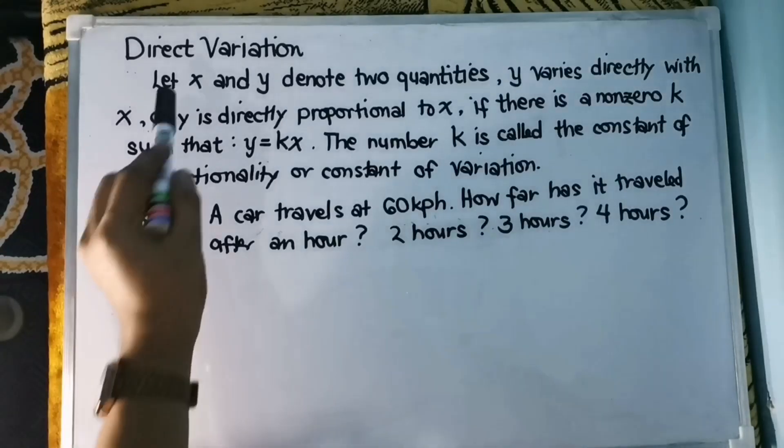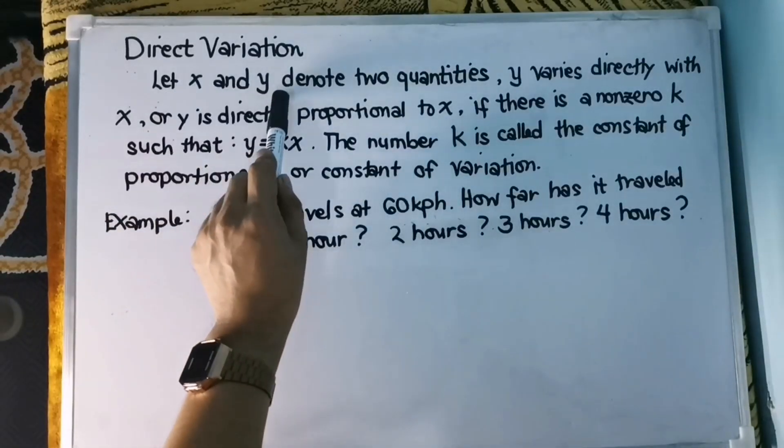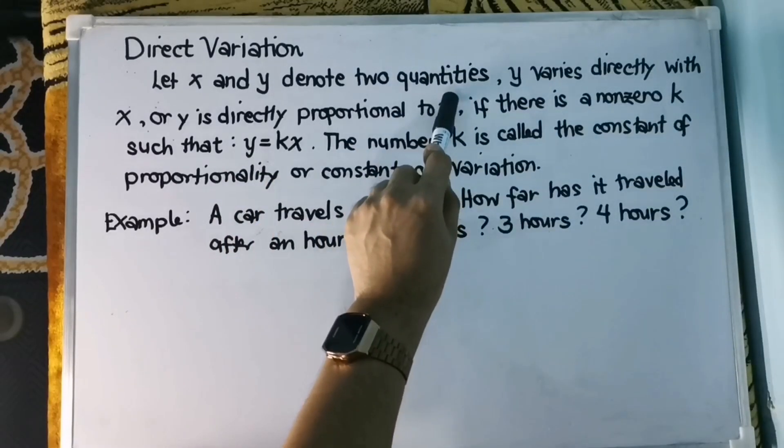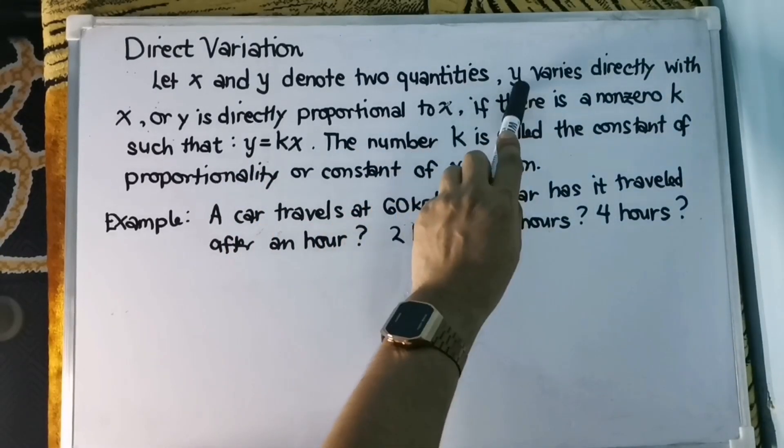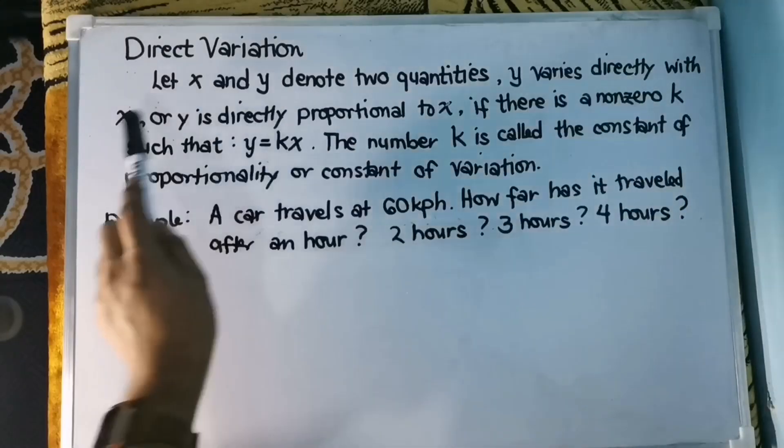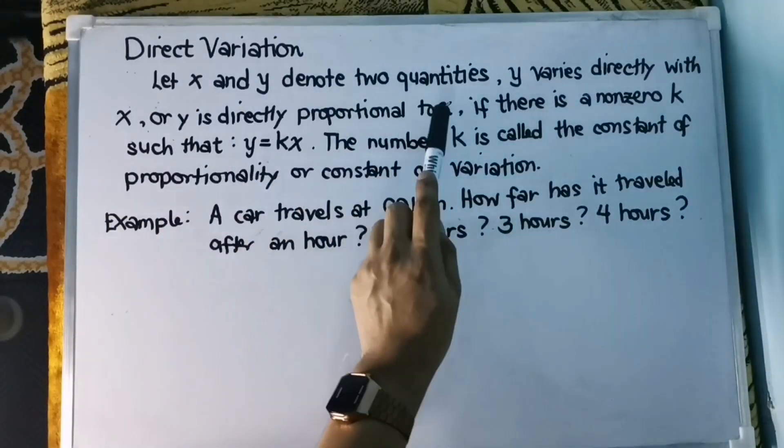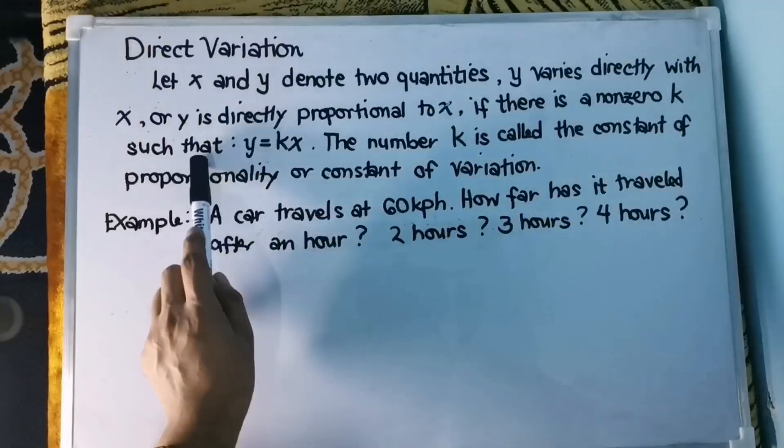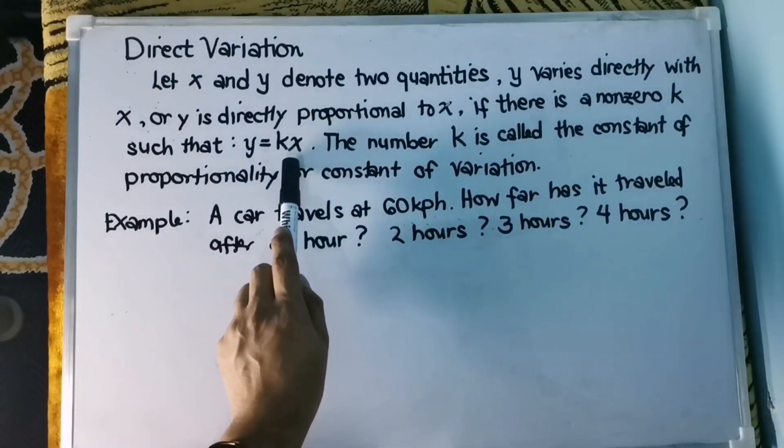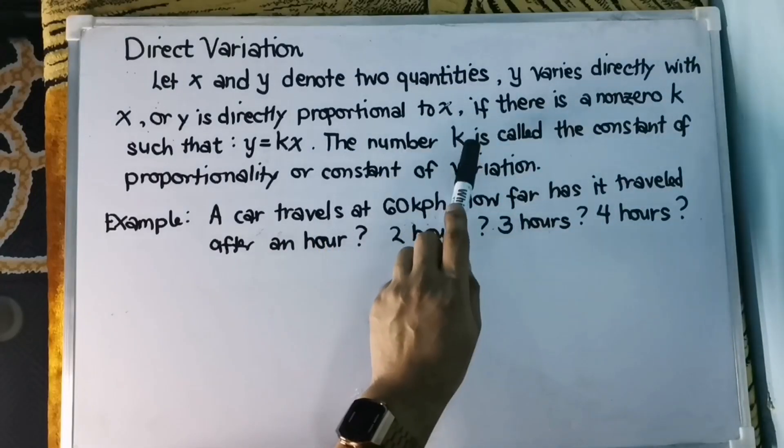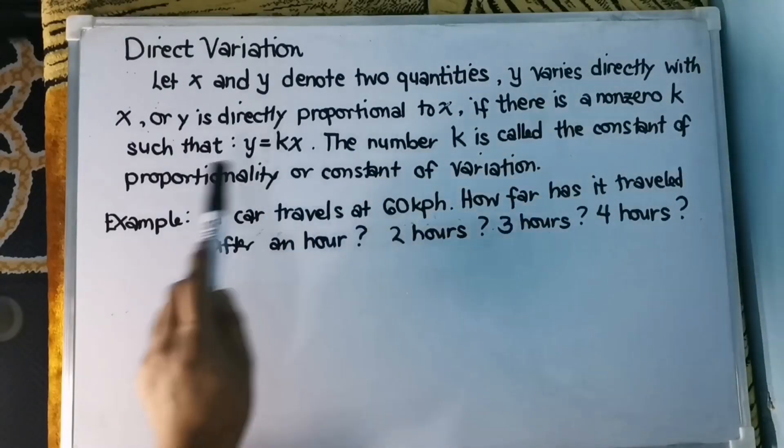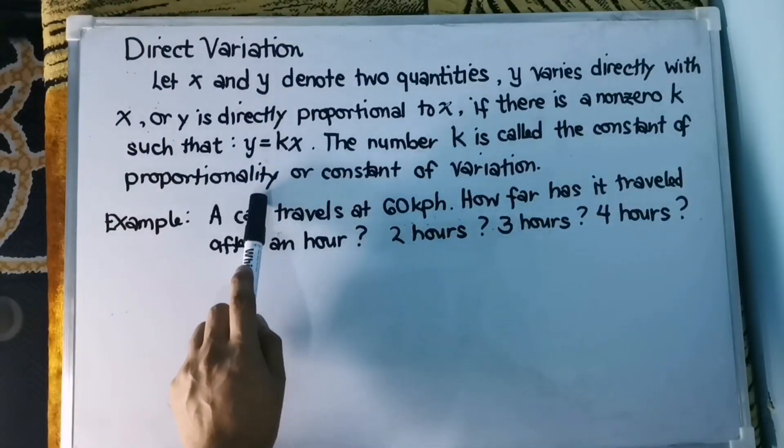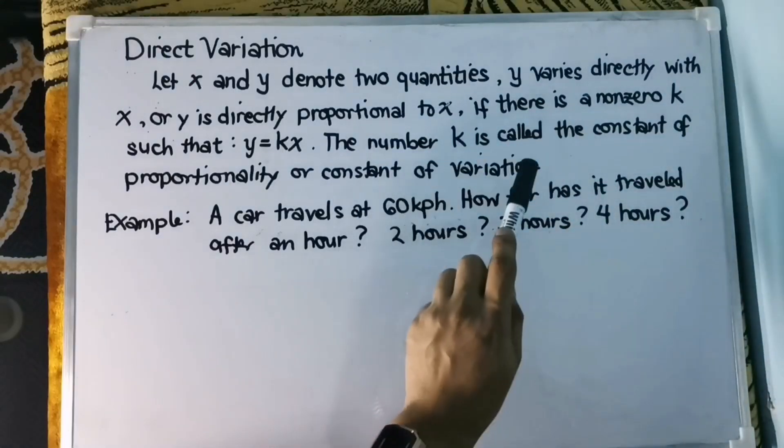Direct variation. Let x and y denote two quantities. We're talking about two quantities wherein y varies directly with x or y is directly proportional to x. If there is a non-zero k such that y equals kx, the number k is called the constant of proportionality or constant of variation.